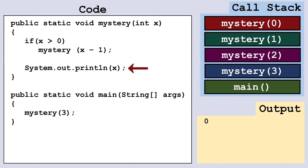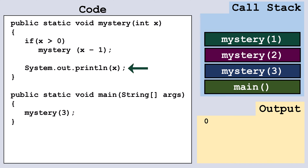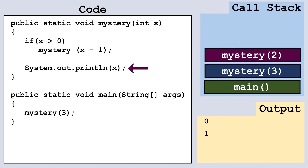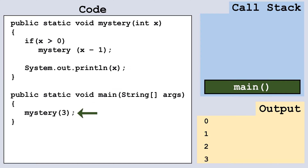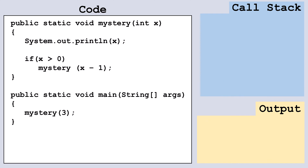Now that we finish this method we pop the frame off the top of the stack. We continue down to the next frame and complete the unprocessed portion — here x is one, so we output one, then pop this frame off the stack. In the next frame x is two, so we output two and pop it off. We go to the next frame where x is three, output three, then pop it off the stack. The call to main completes and its frame is popped off the stack.